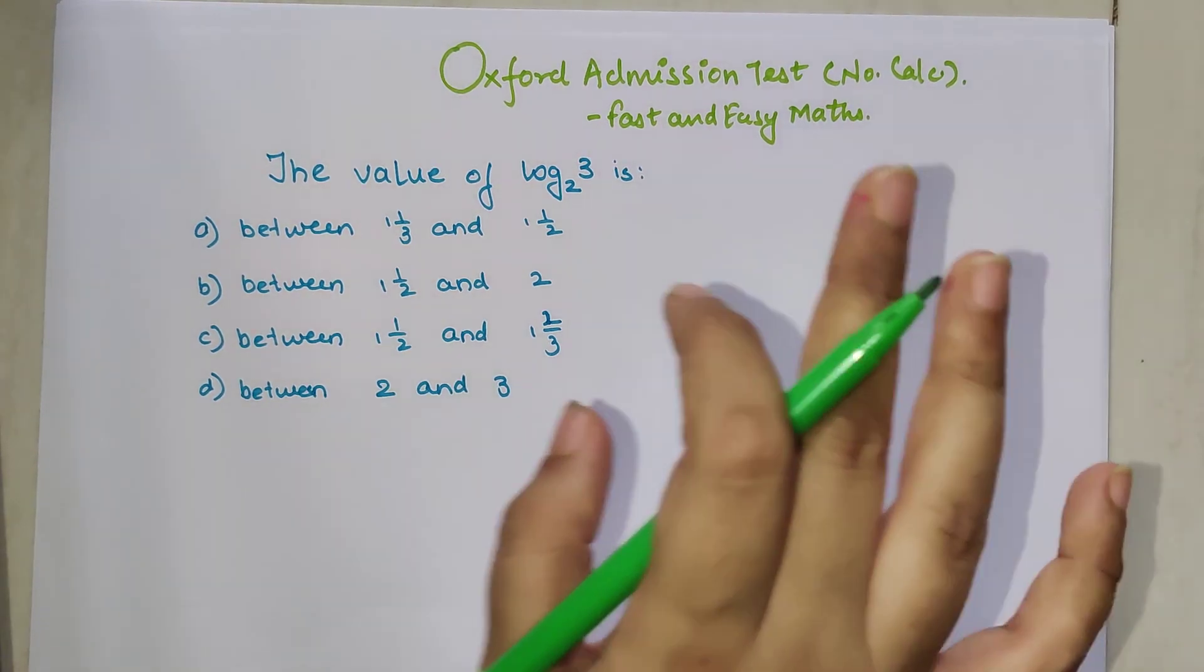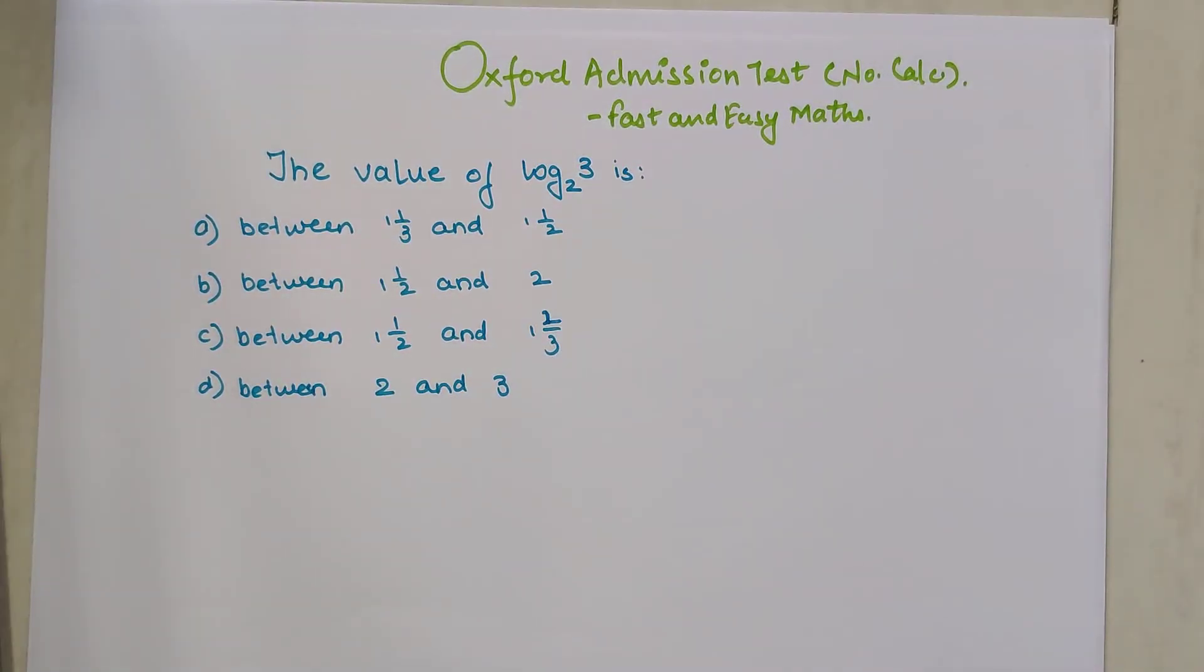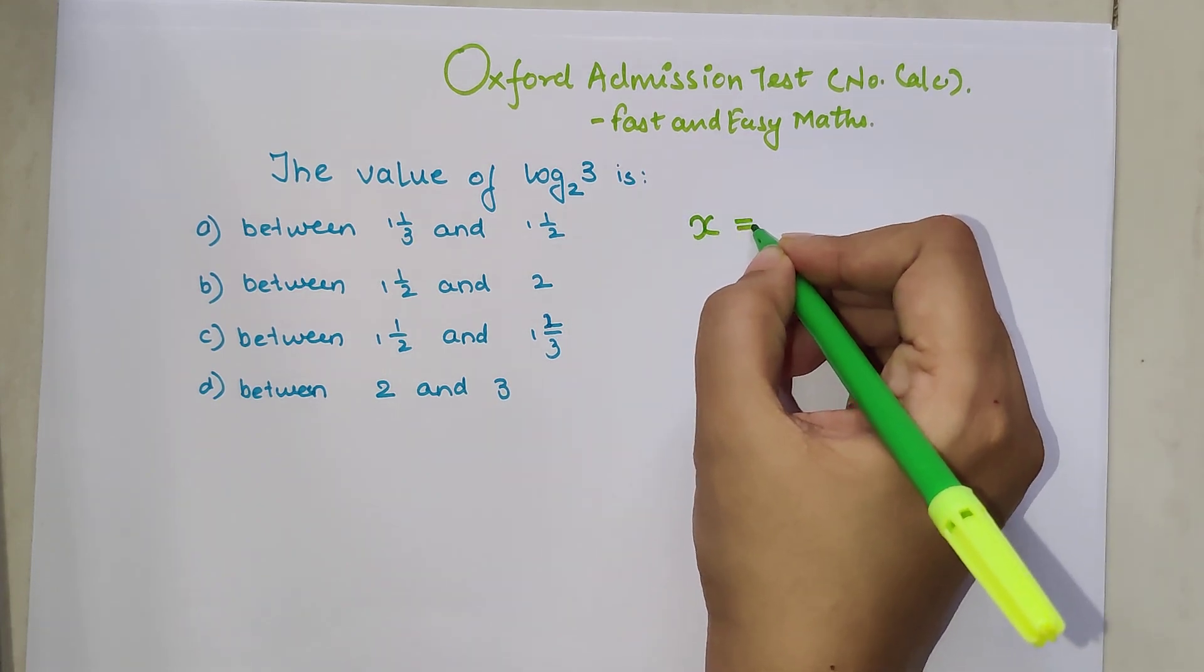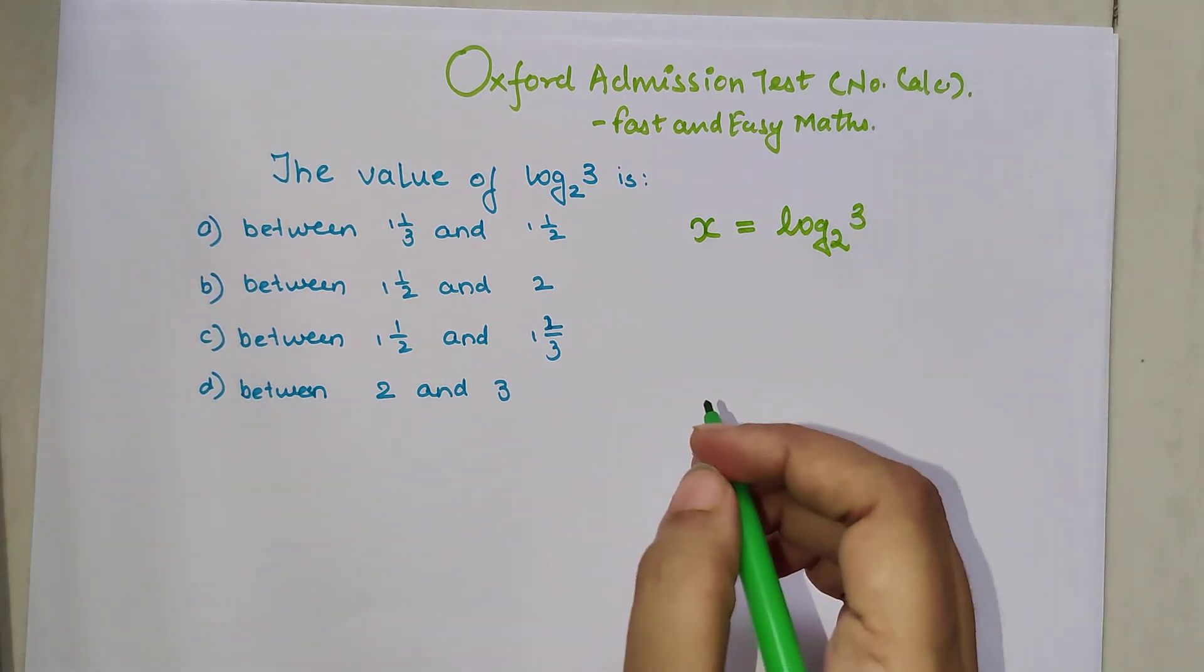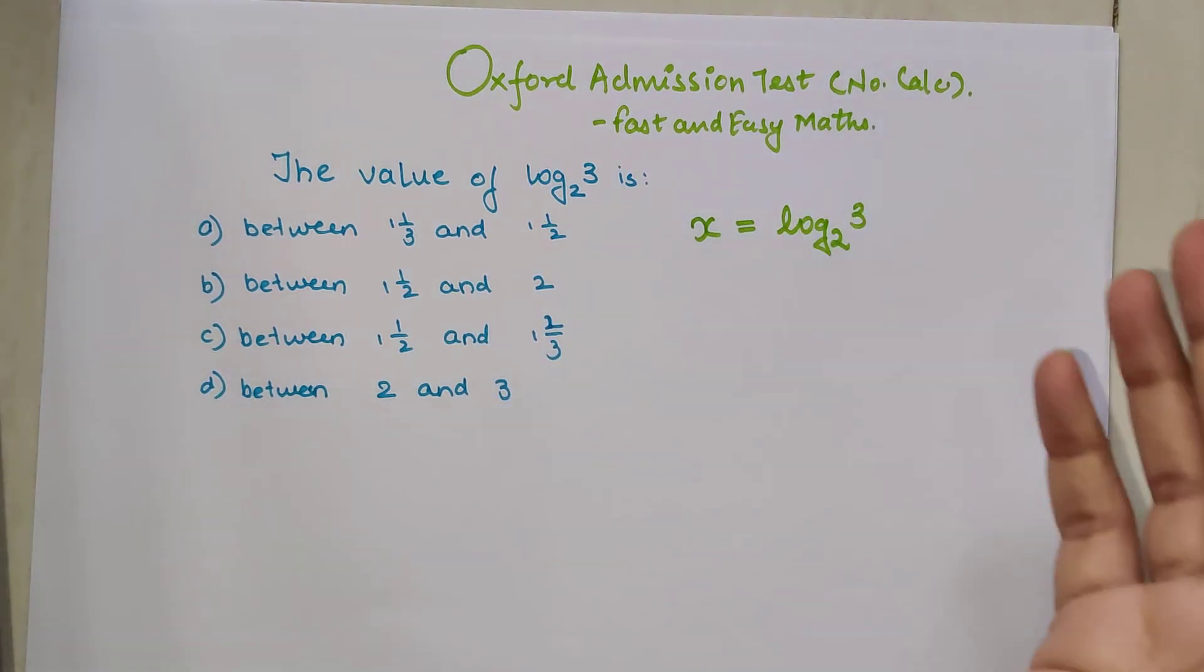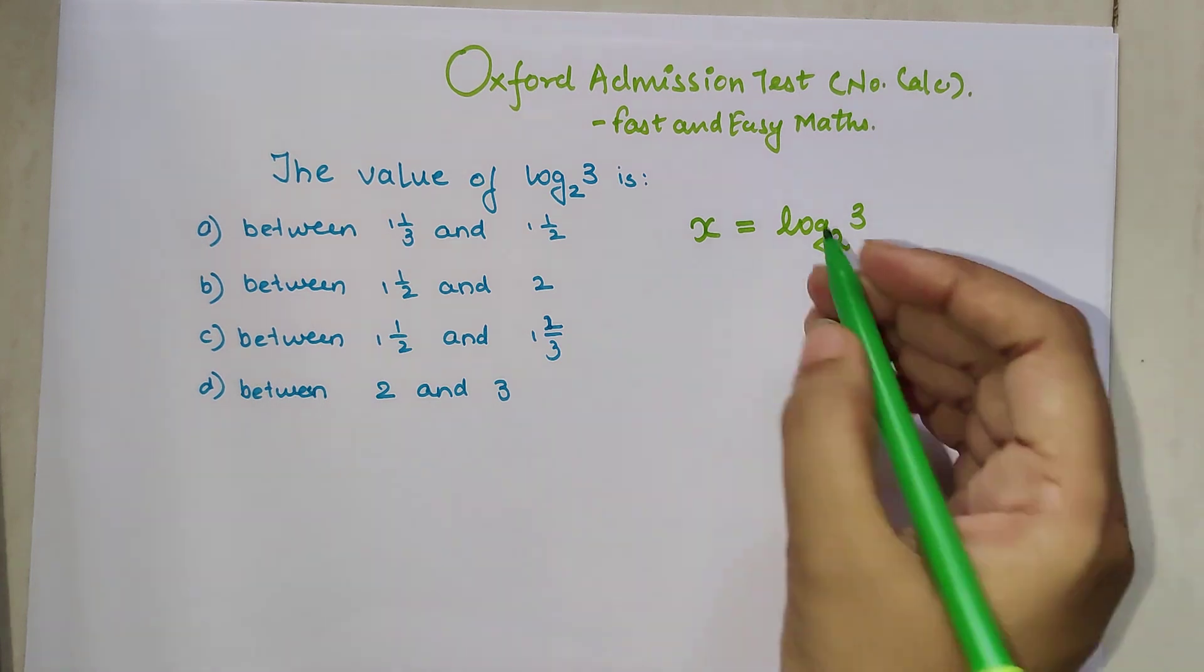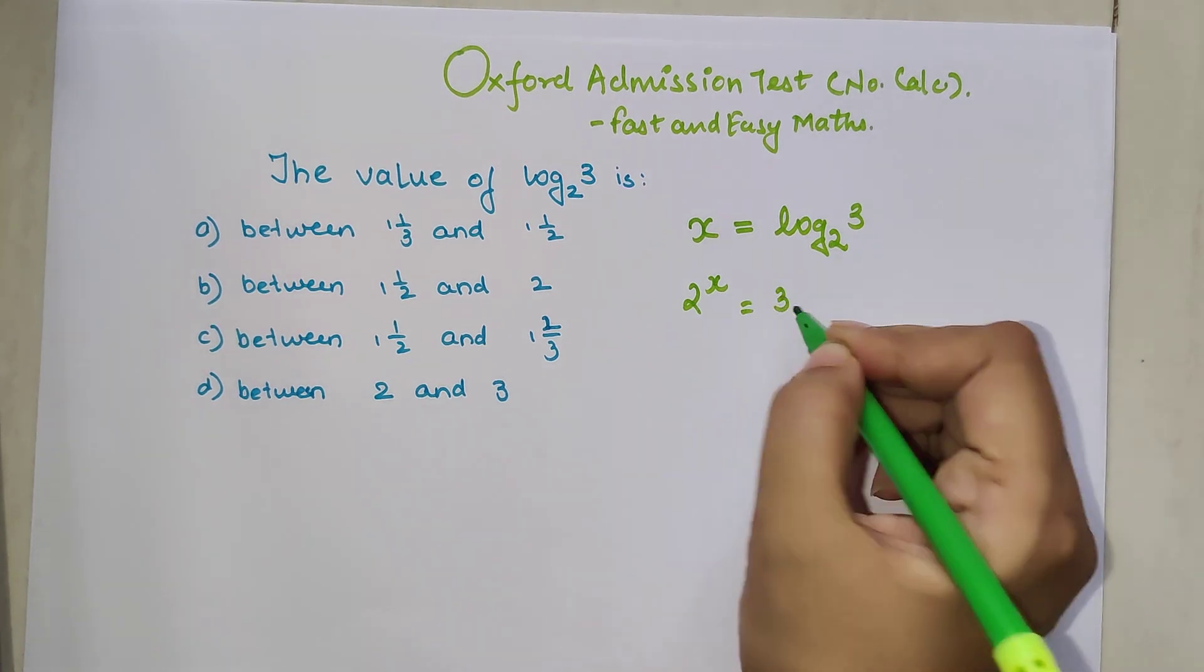So now let's begin. When you have something like this, how will you solve this kind of a question? First things first, let's put x equals log 3 to the base 2. Now, please understand, whenever we deal with logs, finding log value without a calculator or without a log table is a bit difficult. So what do we do? We first do the simple step of removing the logs. Your base over here shifts over here. So we get 2 raised to x equals 3.